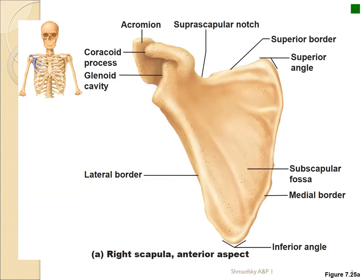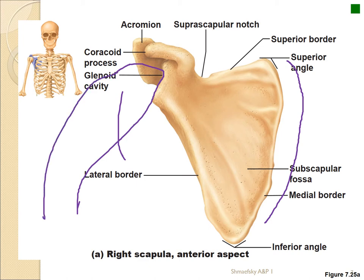Now let's look at the scapula — pay attention because you will be tested on this. This is the anterior view of the scapula, meaning the part that's kind of hidden behind the ribs. This is your medial edge and this is your lateral edge, where it attaches to the humerus. That's your glenoid cavity right there, where the head of the humerus fits in. You have to determine whether this is the left or right scapula — in this case, this is your right.